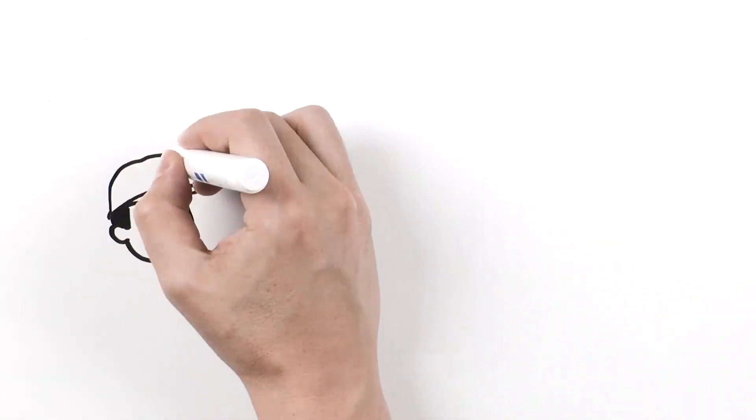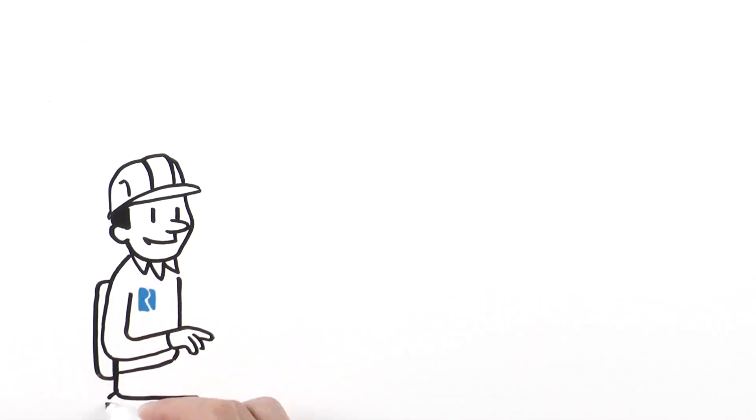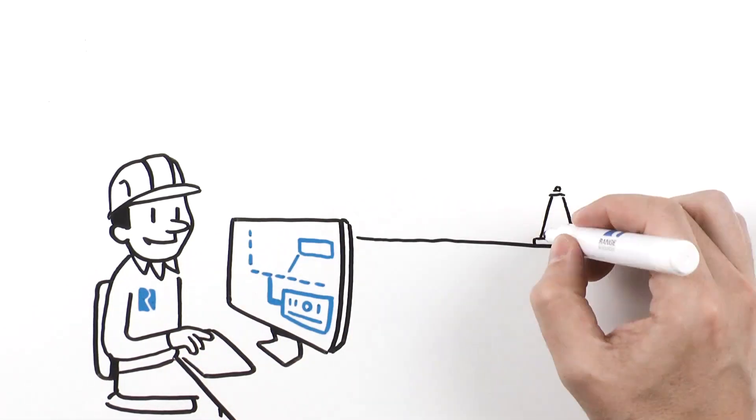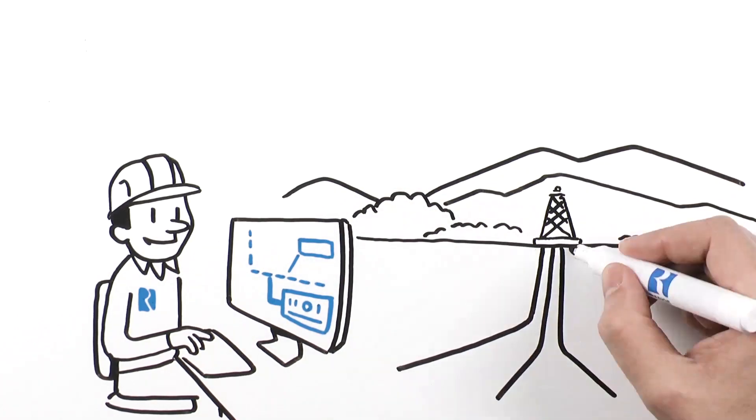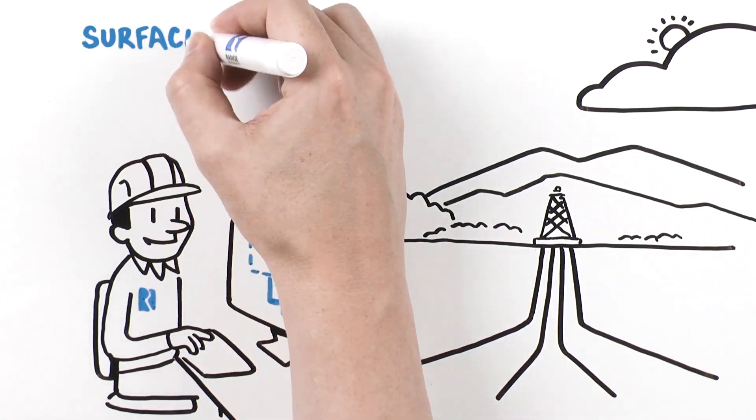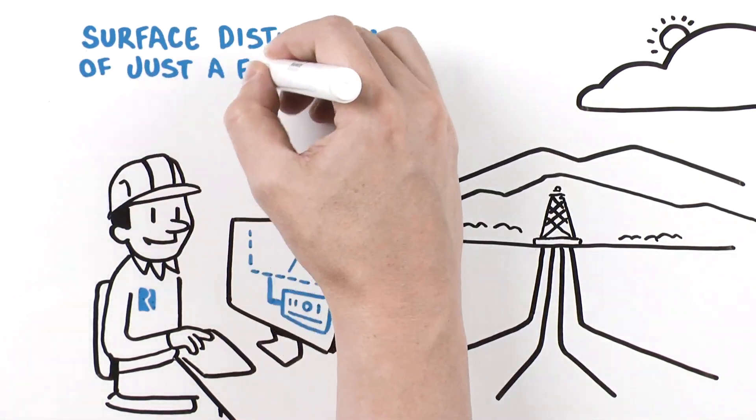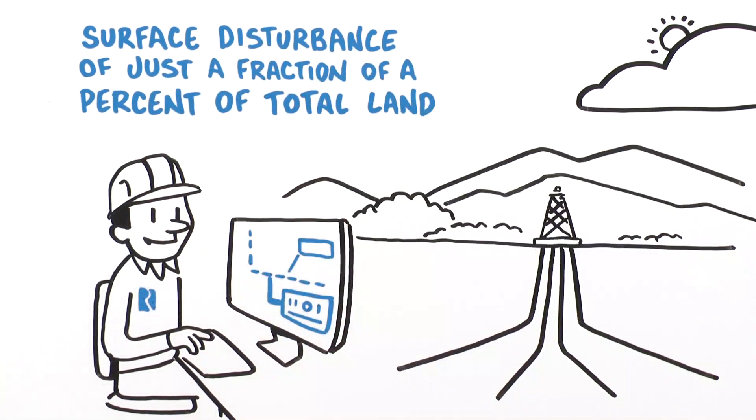These modern technologies allow Range to safely develop energy across thousands of acres from a single surface location, which represents a small surface disturbance of just a fraction of a percent of the total land needed to develop the natural resources.